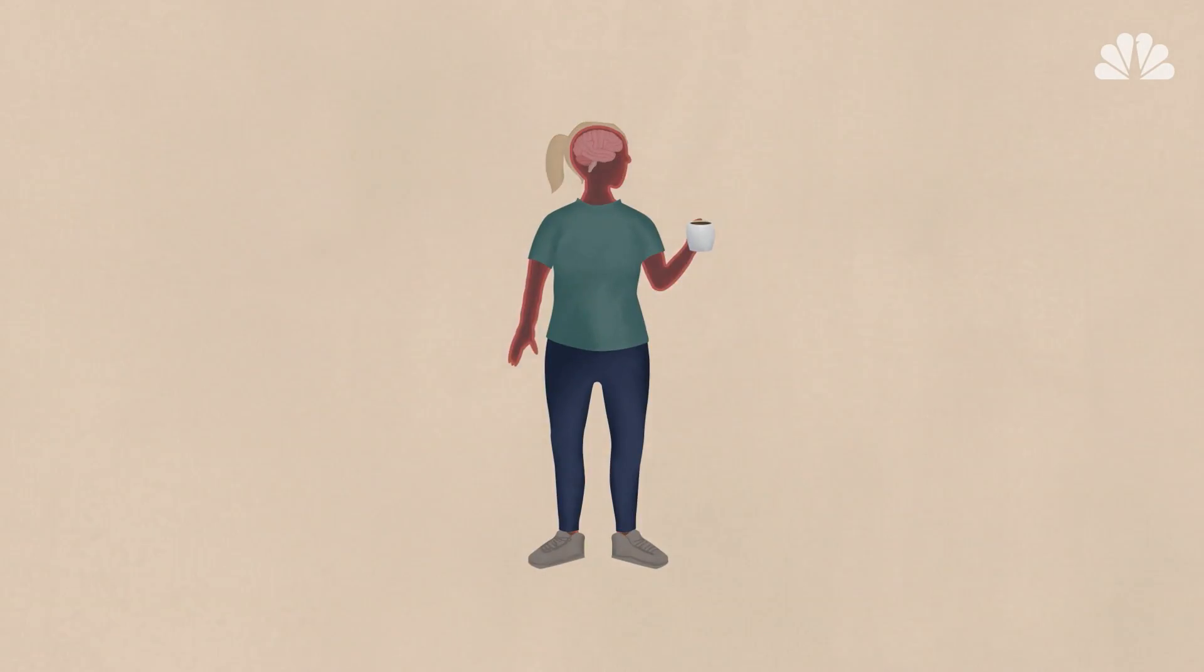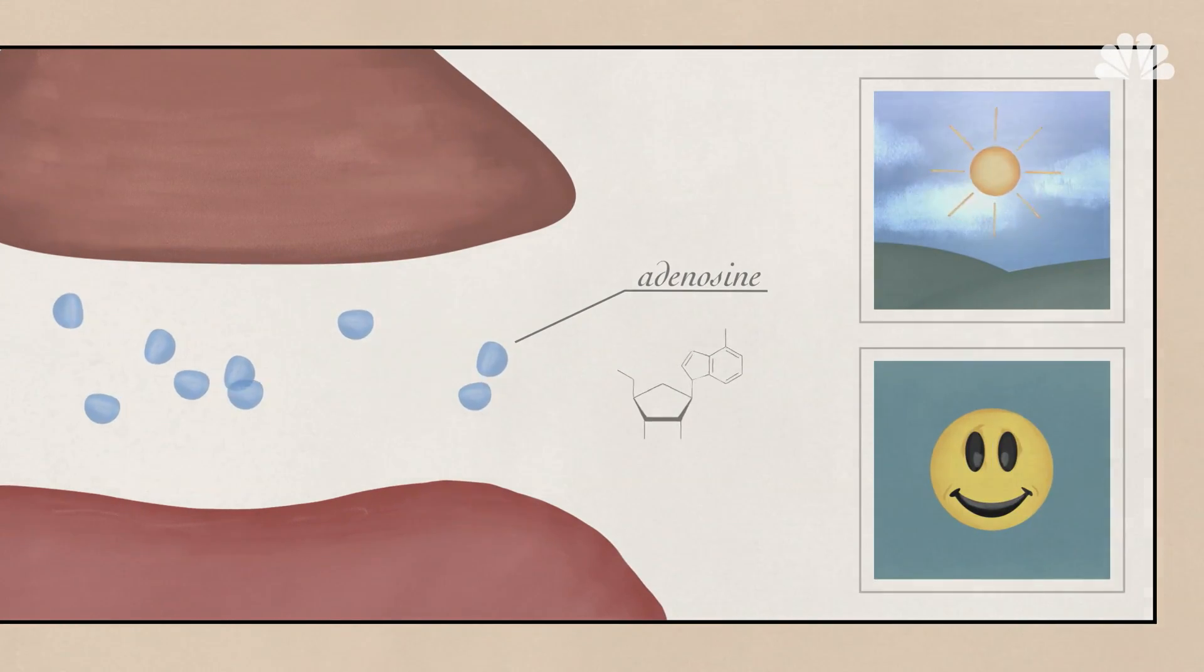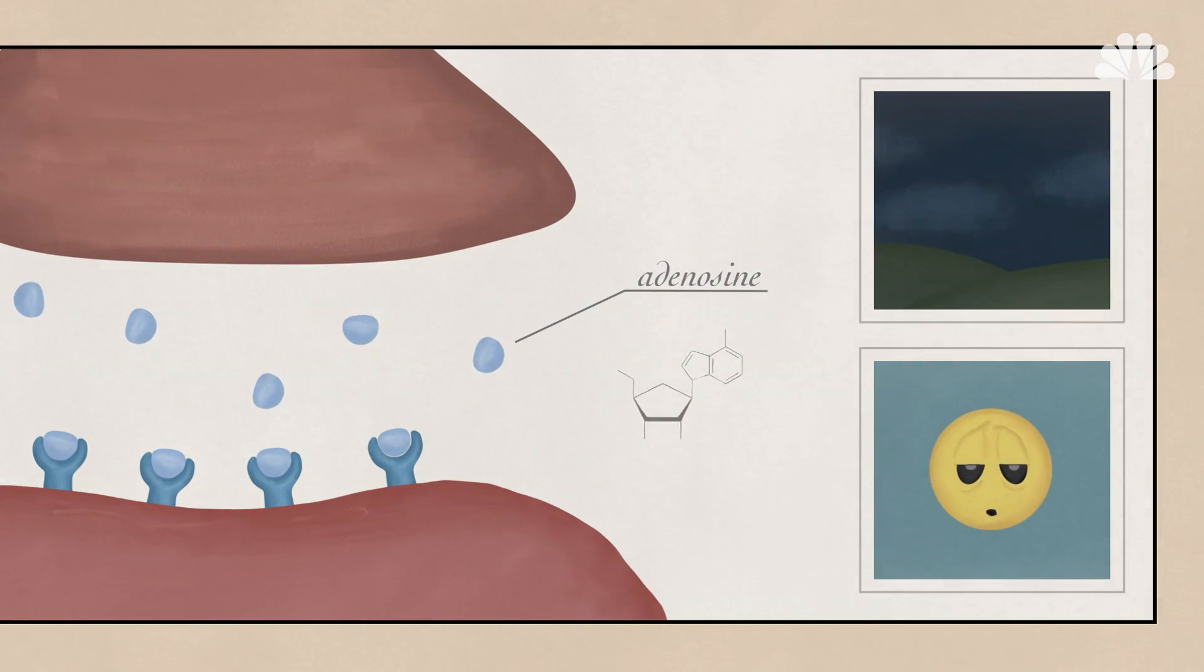On a structural level, caffeine is strikingly similar to adenosine, which is a tiredness hormone in our brains. Adenosine accumulates as the day goes on, locking into neural receptors and making you tired as the hour grows late. While you sleep, the amount of adenosine slowly declines.